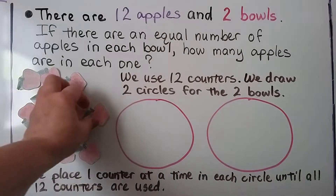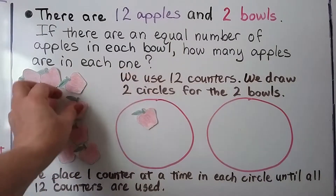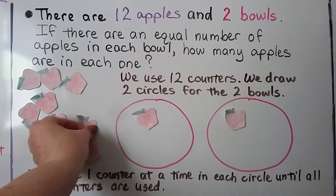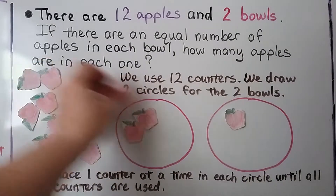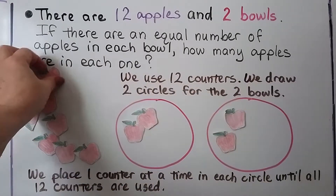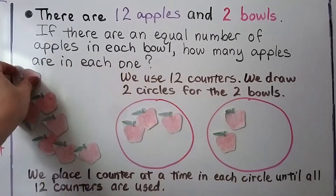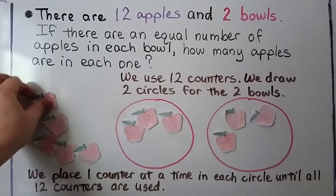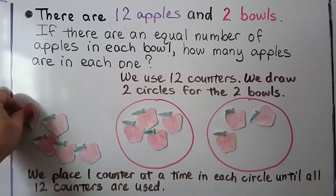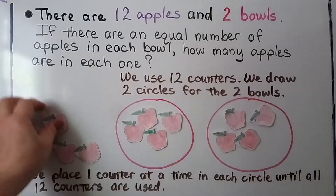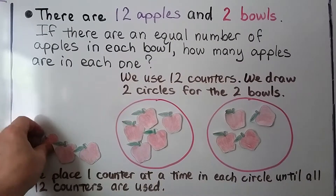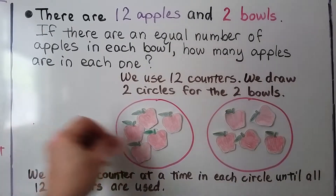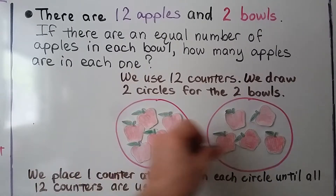So we put an apple in this bowl, then 1 in this one, an apple in this bowl, and 1 in this one, an apple in this bowl, and 1 in this one. We keep taking turns, going back and forth until we've used all 12 counters. It's important that we take turns so we know we have an equal amount in each group.